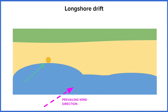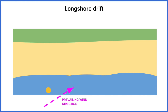Now another wave comes down and then moves back off the beach, which is called the backwash, and it's going to take that pebble back into the sea. And this is going to happen over and over again. So what we're finding is that on this bit of coastline, material from the west of the beach is being moved down the beach to the east.